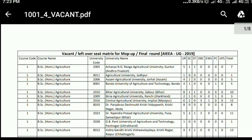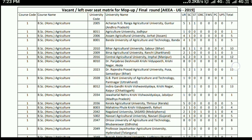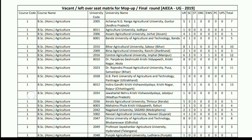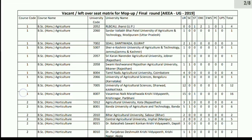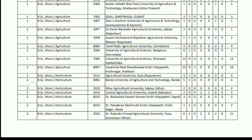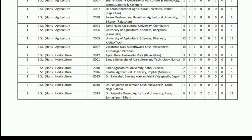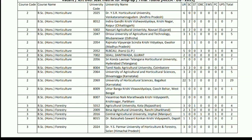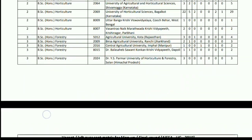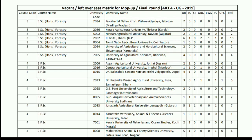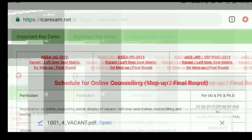I am talking about the UG course. In this way you have to see the feet vacant in this college — how many feet in the UG course are written in the matric, how many feet in the FIREE college are vacant, and you have to do choice filling. How many feet in the final round, how many feet in the UG course are vacant.